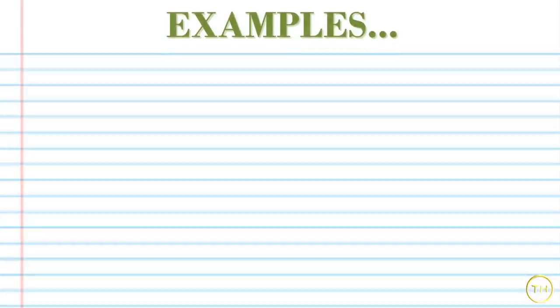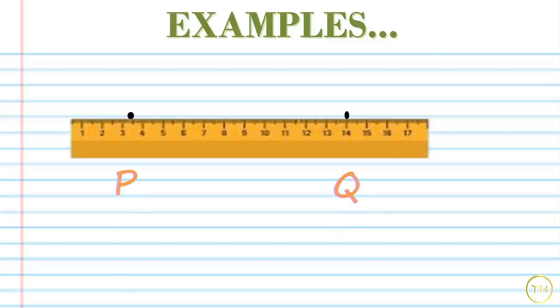For example, take two points P and Q on a sheet of paper and join them using a ruler.